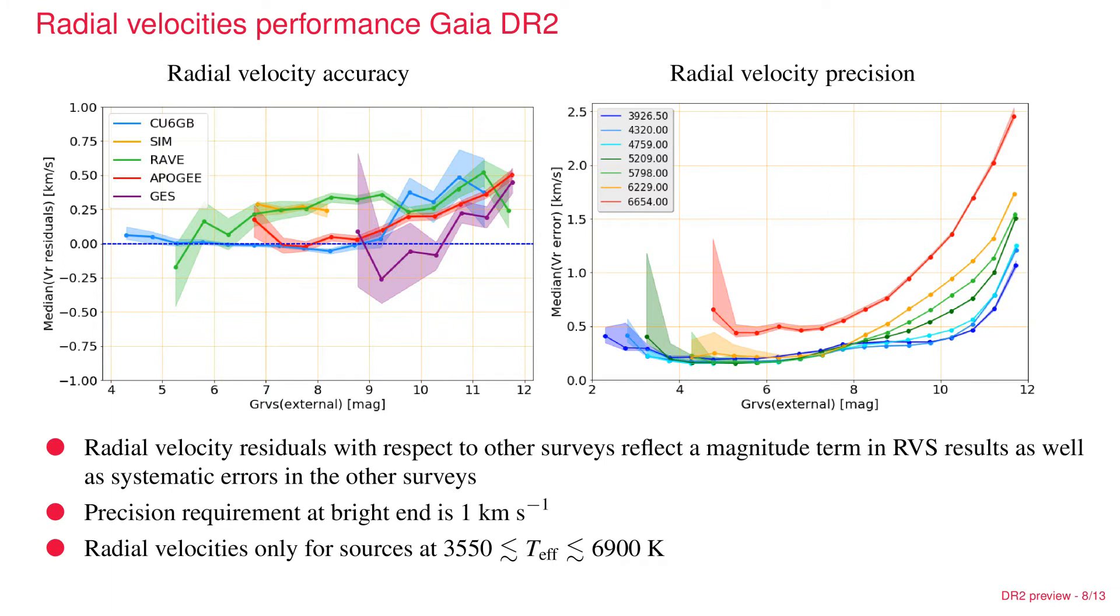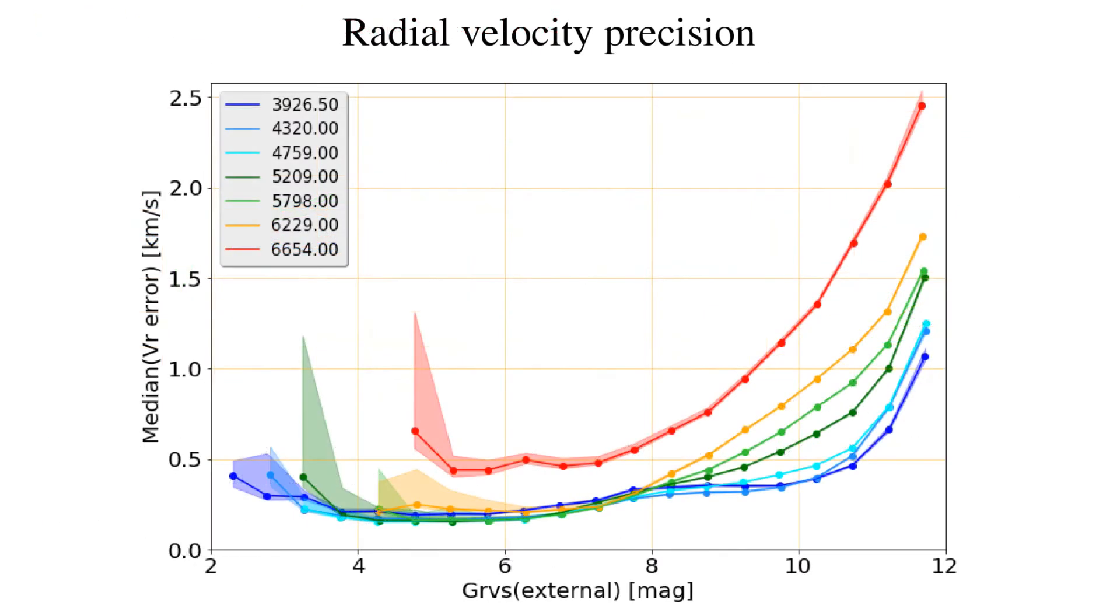On the right is a measure of the precision that we achieve, divided up according to the temperature of the stars, according to spectral types. For cooler stars, which are the blue and the orange curves, we expect better performance. There we reach below half a kilometer per second or so at the bright end. Even for the slightly hotter stars, this is achieved.